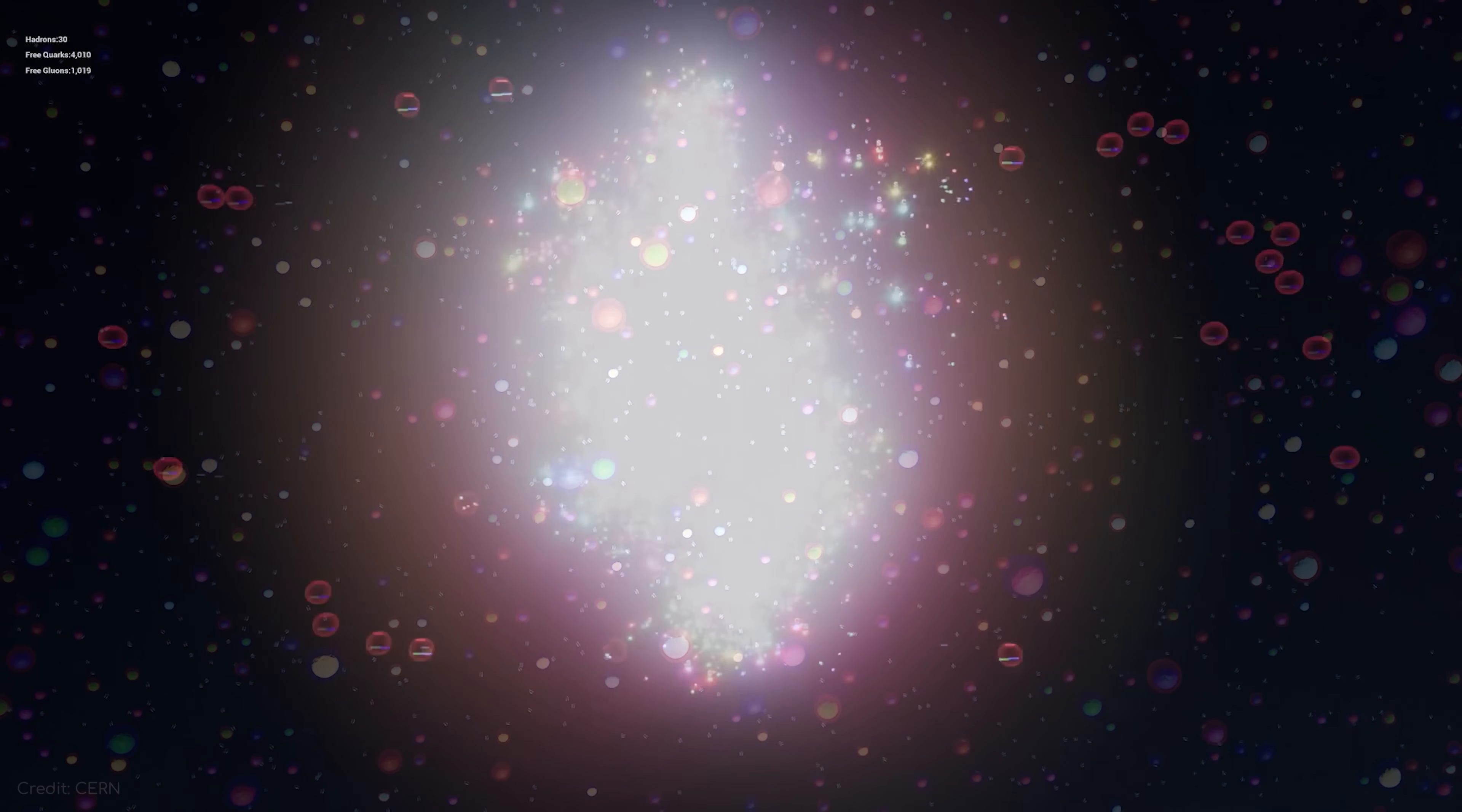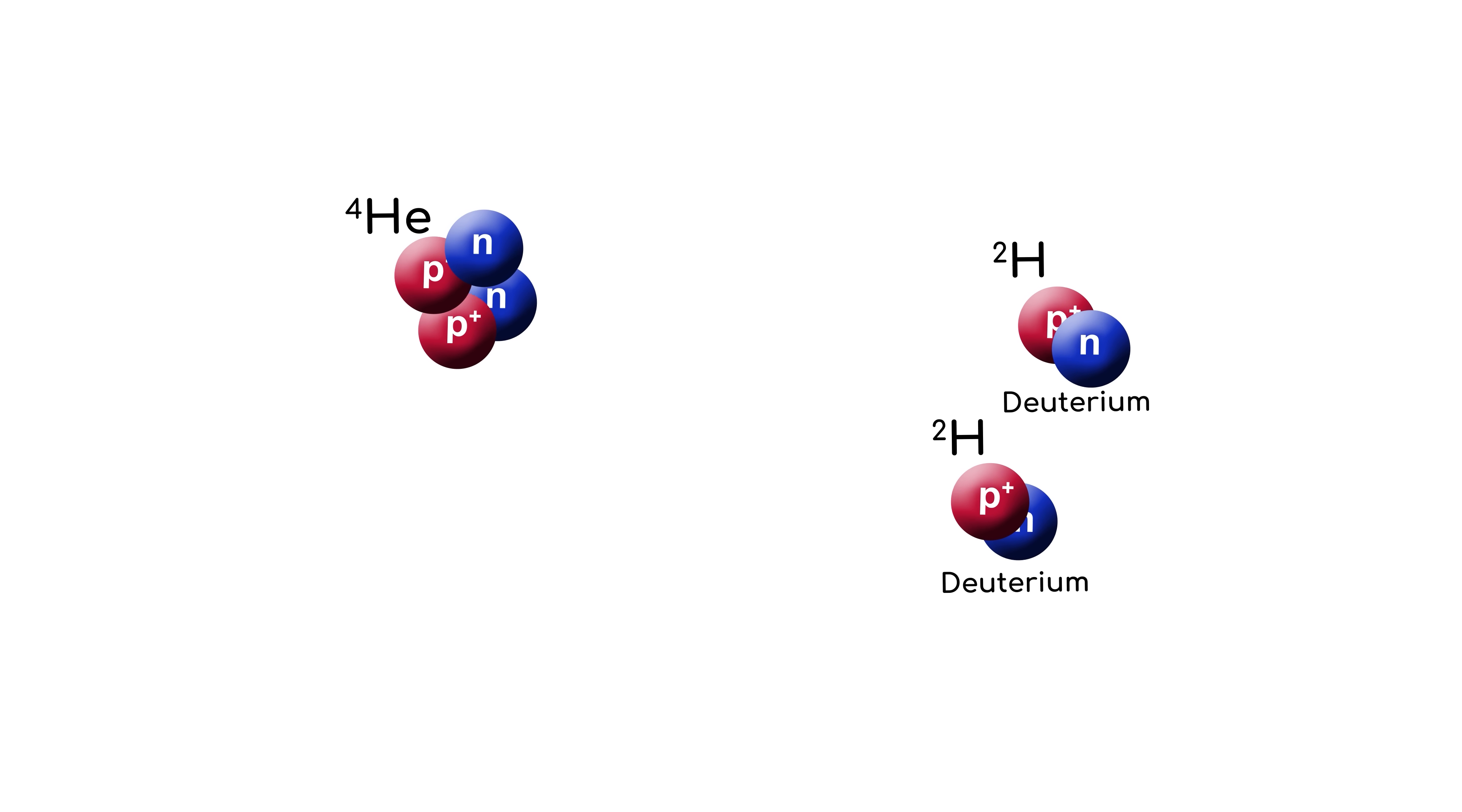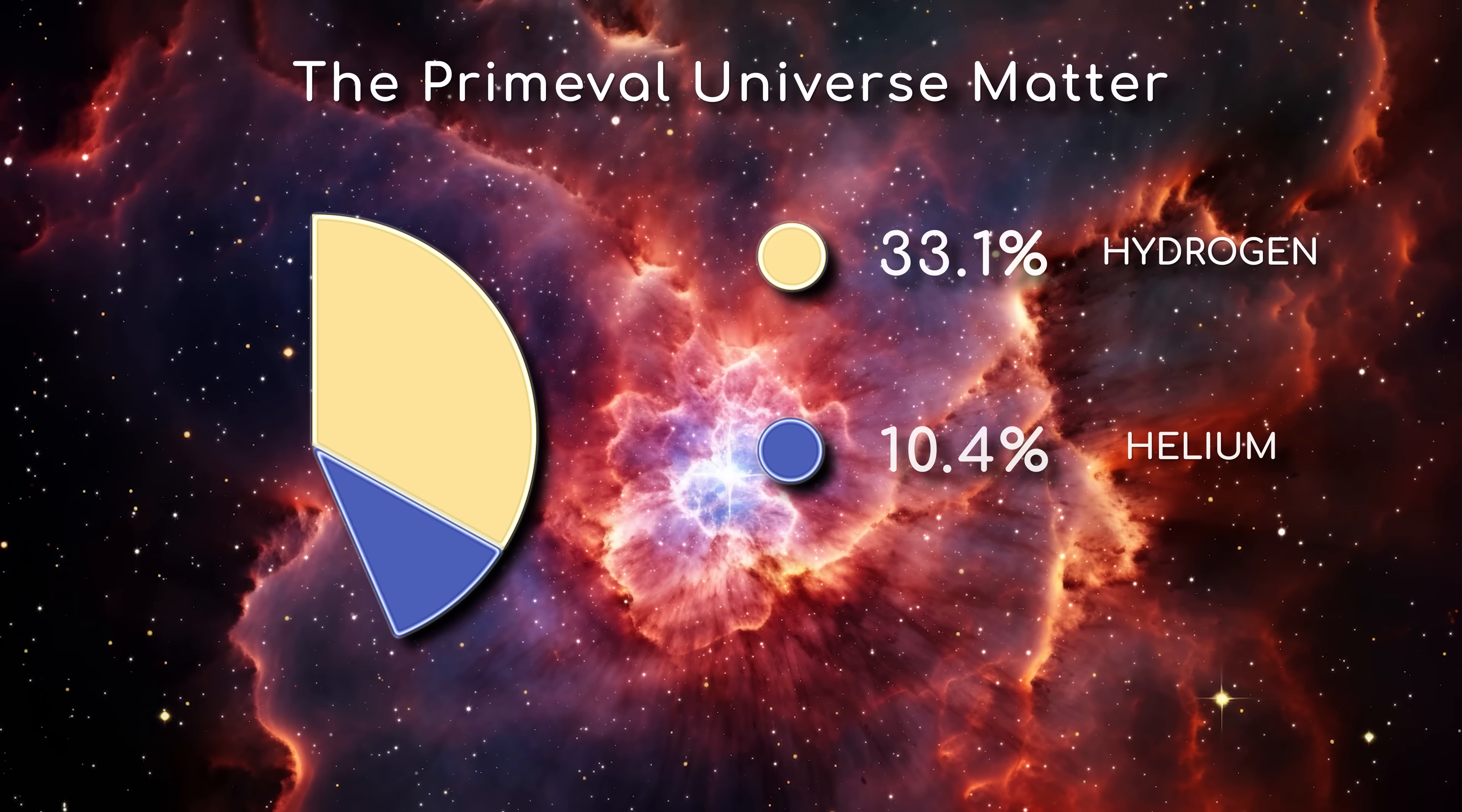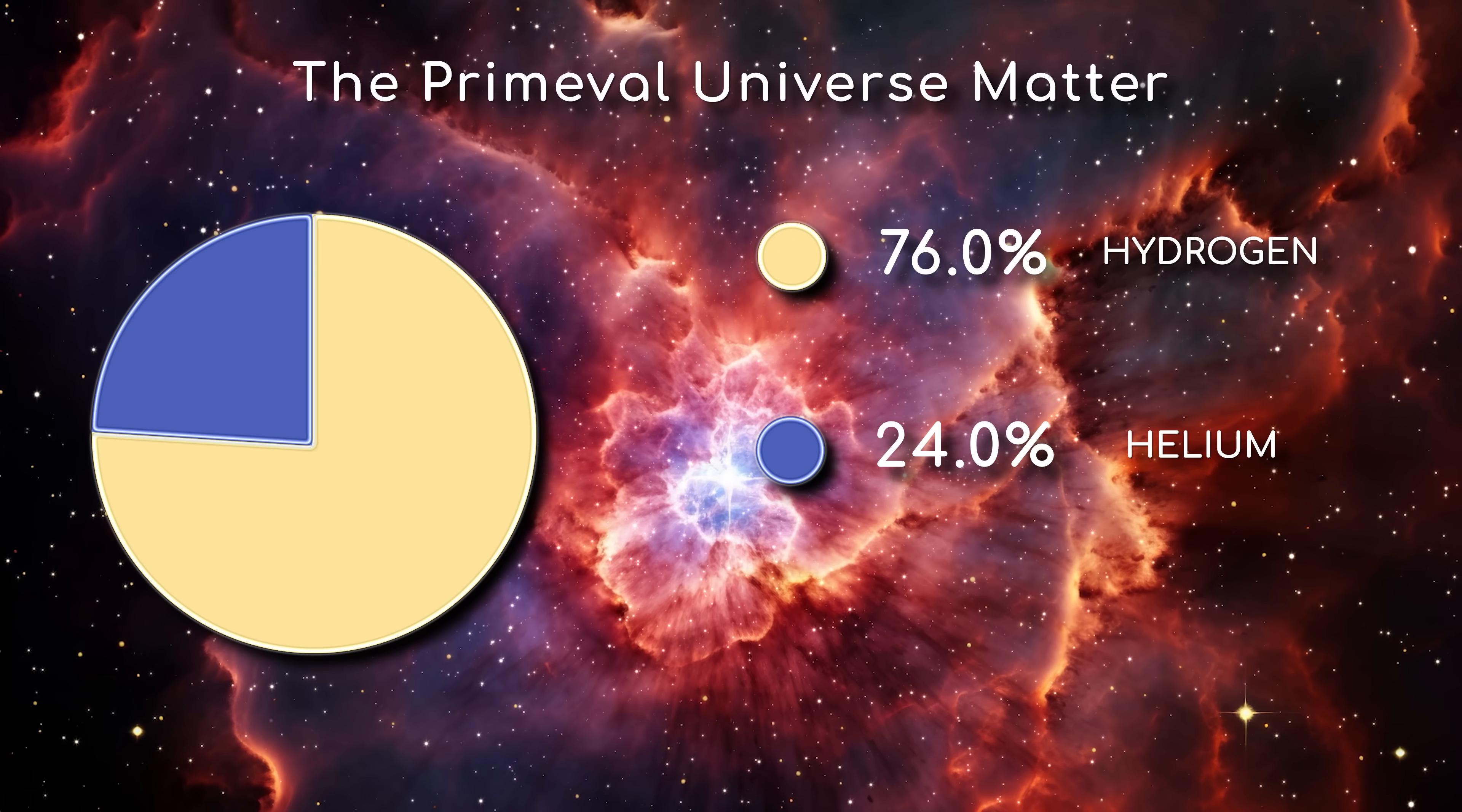Everything was still filled with so much energy that the hydrogen protons frequently smashed into each other, underwent nuclear fusion, and soon created the larger, more complex element, helium, with two protons. Once you run the equations, in the primeval universe, matter was nearly 76% hydrogen, and nearly 24% helium.